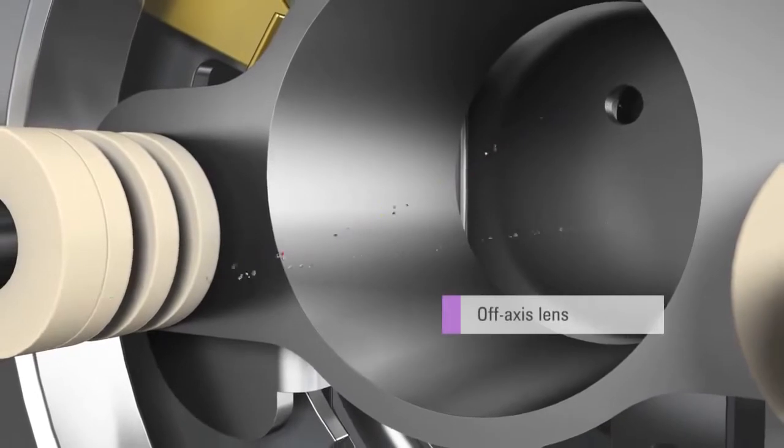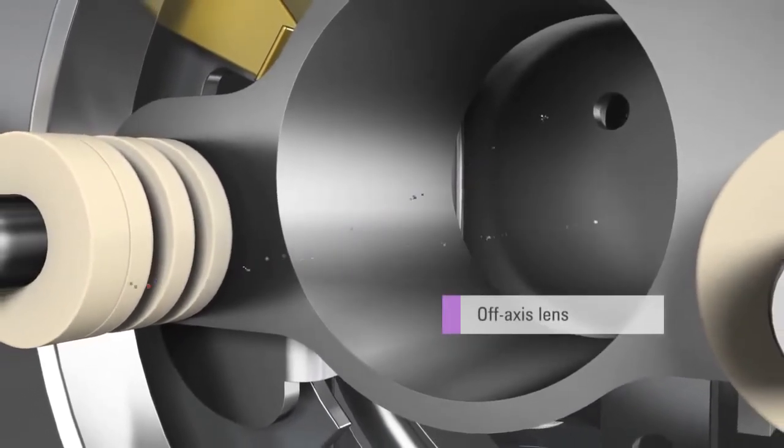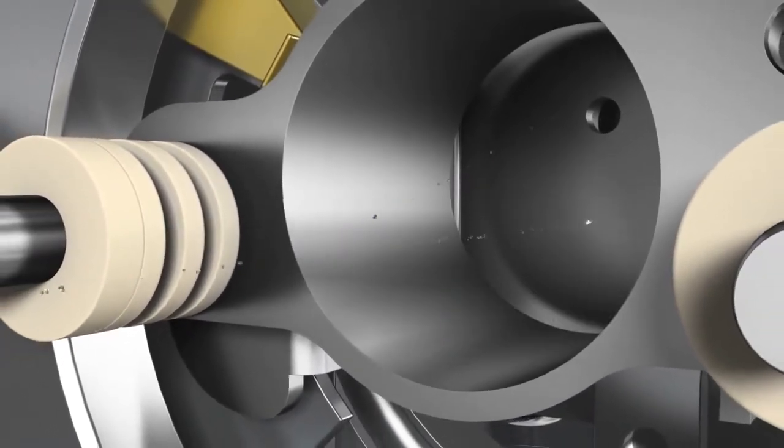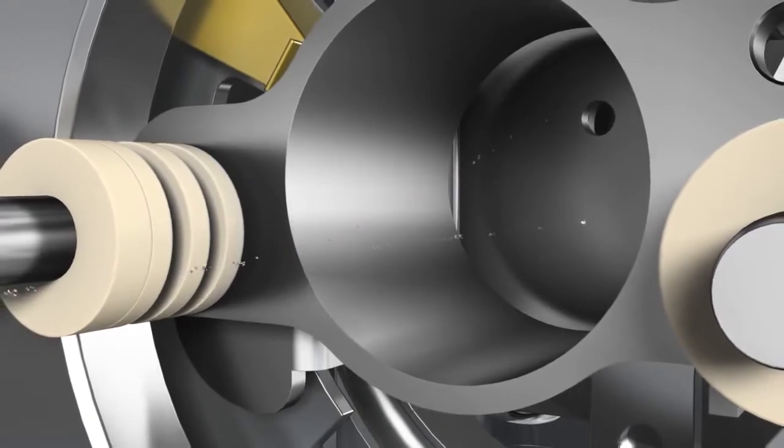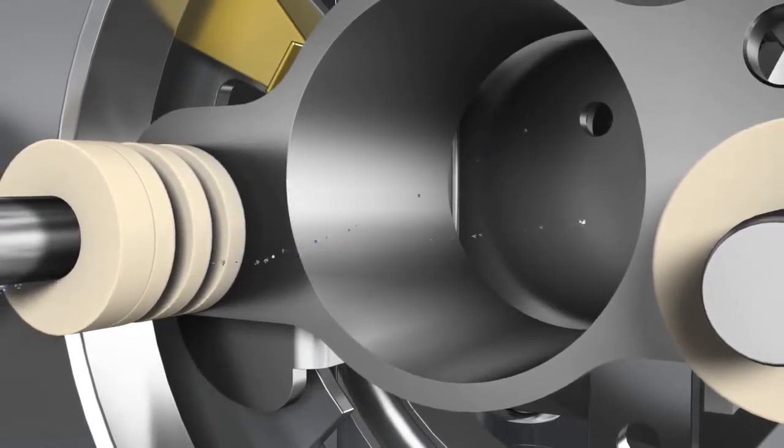The off-axis Omega lens deflects the ions into the collision reaction cell while rejecting photons and neutral species, which would increase random background noise.